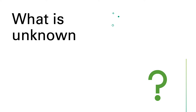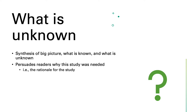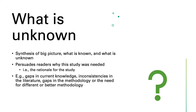What is unknown should present a synthesis of the big picture, what is already known, and what is unknown, to convince the audience why there is a need to conduct your specific study — in other words, the rationale for the study. For example, this part can highlight gaps in current knowledge, any inconsistencies in the literature, gaps in methodology, or the need for a different or better methodology. It can also highlight who would likely benefit from this study.